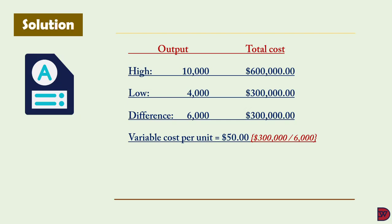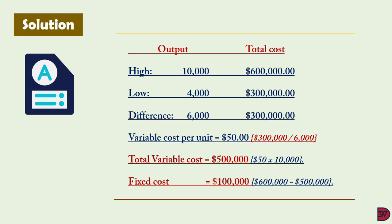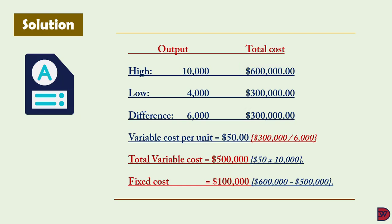The total variable cost is $500,000, calculated by multiplying the variable cost per unit ($50) by the high output (10,000 units). The fixed cost is then the total cost at the high output level less the total variable cost at that level: $600,000 − $500,000 = $100,000. You should arrive at the same fixed cost figure if you use the low output side.